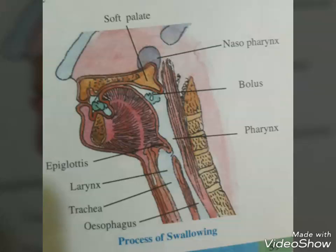An adult human has 32 permanent teeth which are of four types — heterodont dentition — namely incisors, canines, premolars and molars. The arrangement of teeth in each half of the upper and lower jaw is represented by a dental formula, which in humans is 2123 by 2123.